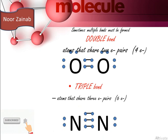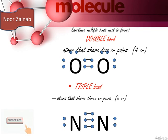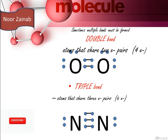A triple bond involves atoms that share three pairs of electrons. One pair of electrons contains two electrons, so three pairs of electrons contain six electrons. For example, in a nitrogen molecule (N₂), three bonds are formed by the sharing of three electron pairs. In an oxygen molecule (O₂), two electron pairs are involved forming the O₂ molecule.